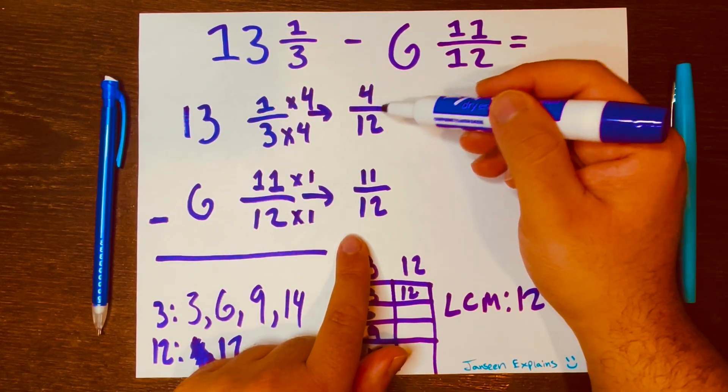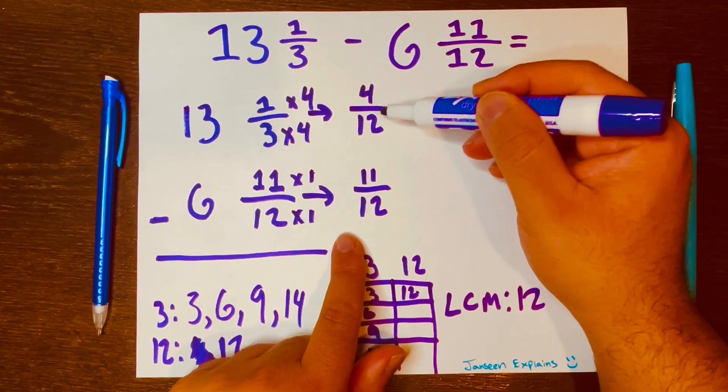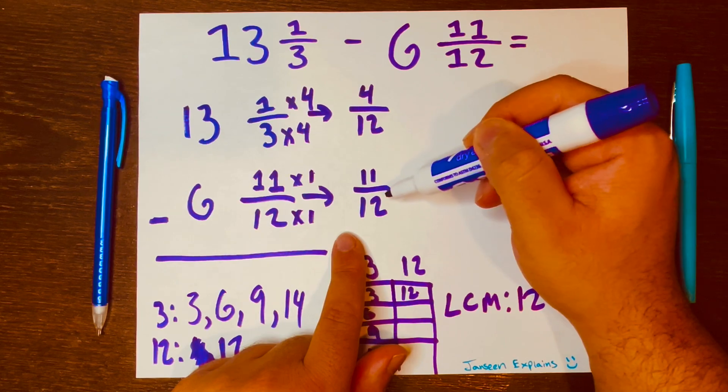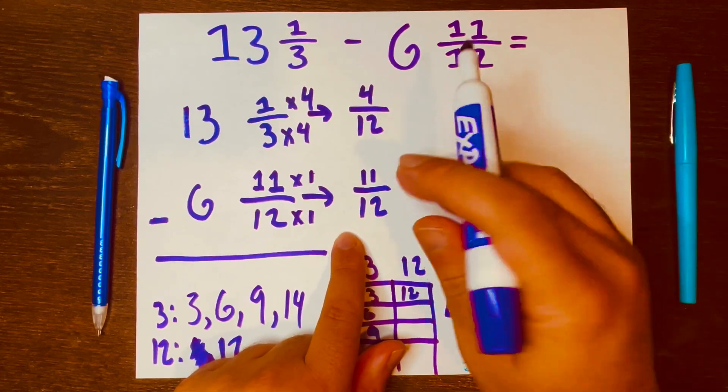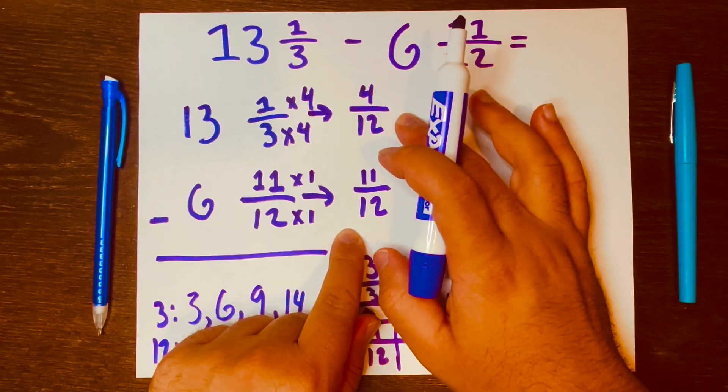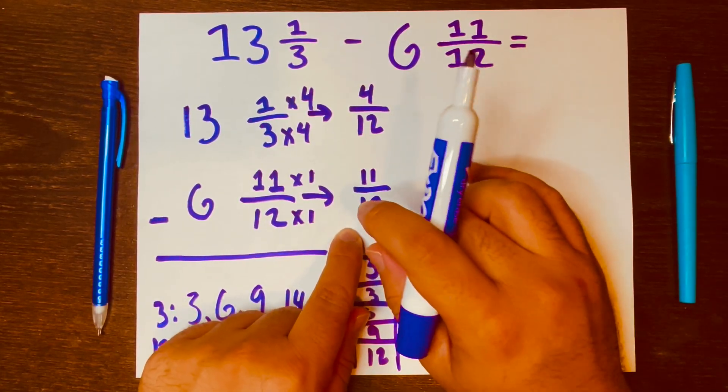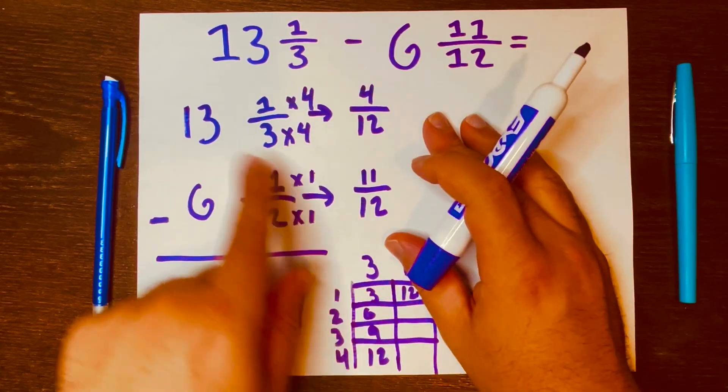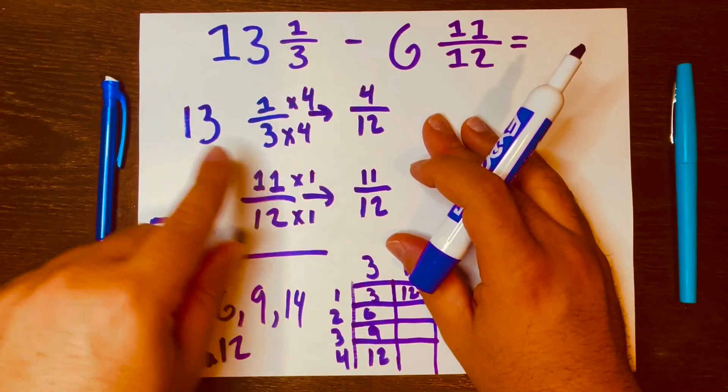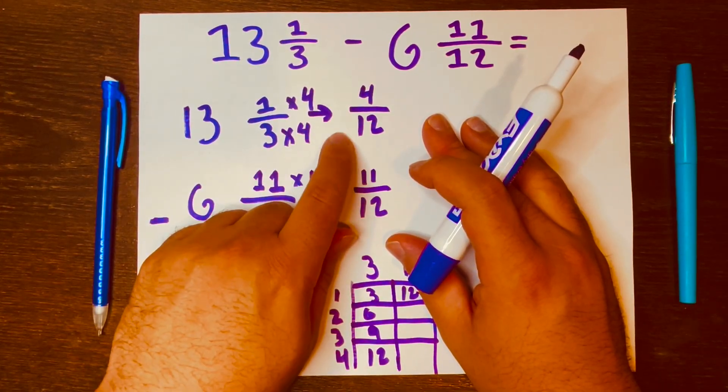Now, there's a problem here. 4/12 is smaller than the 11/12. And anytime you have the first fraction smaller than the second fraction, you need to borrow from the whole number that I'm pointing at, which is 13, to make the first fraction larger so then you can subtract.